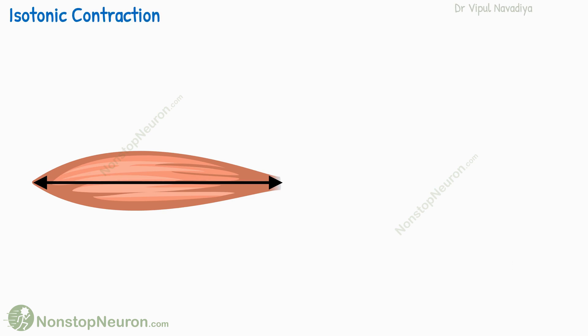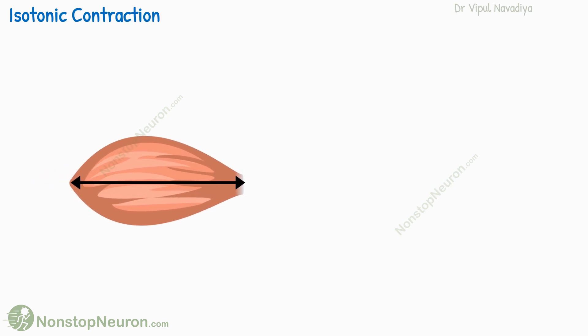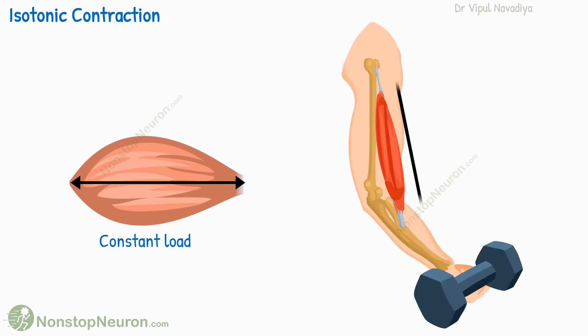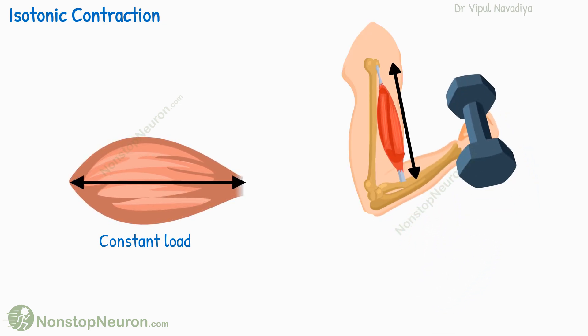Now, isotonic contraction involves changes in muscle length at a constant load. In the previous example, if you lift the dumbbell up, your bicep muscle contracts and thereby shortens. During this, the load on the muscle — which is basically the weight of the dumbbell — remains constant. As the load, or in other words, the tension on the muscle remains constant, it's called isotonic contraction.